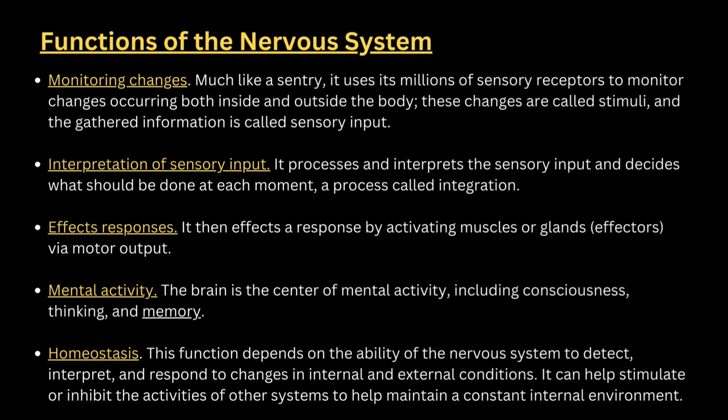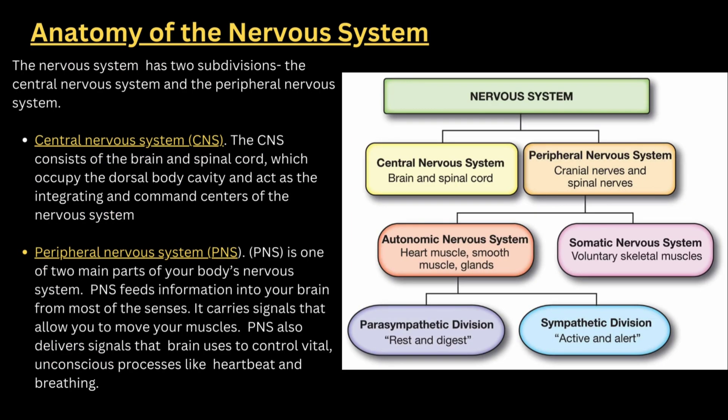You can see the definitions for all those. The nervous system can be divided into two: the central nervous system and the peripheral nervous system. The central nervous system has the brain and spinal cord. The peripheral nervous system has cranial nerves and spinal nerves. The peripheral nervous system is again divided into the autonomic nervous system and the somatic nervous system.